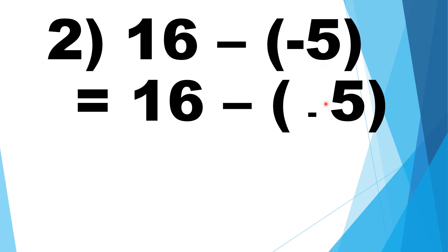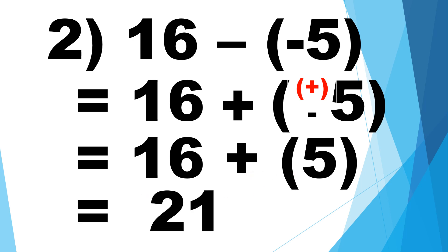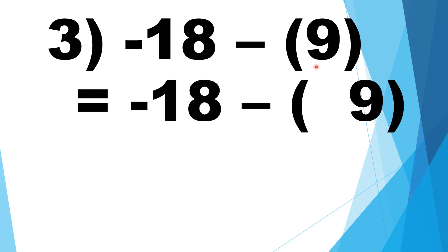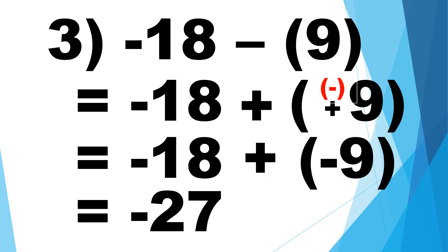Number 2: positive 16 minus negative 5. Change the sign of the subtrahend — negative to positive. Then proceed to addition: 16 plus 5 is equal to 21. Number 3: negative 18 minus positive 9. Change the sign of the subtrahend — positive to negative. Then proceed to addition: negative 18 plus negative 9 is equal to negative 27.